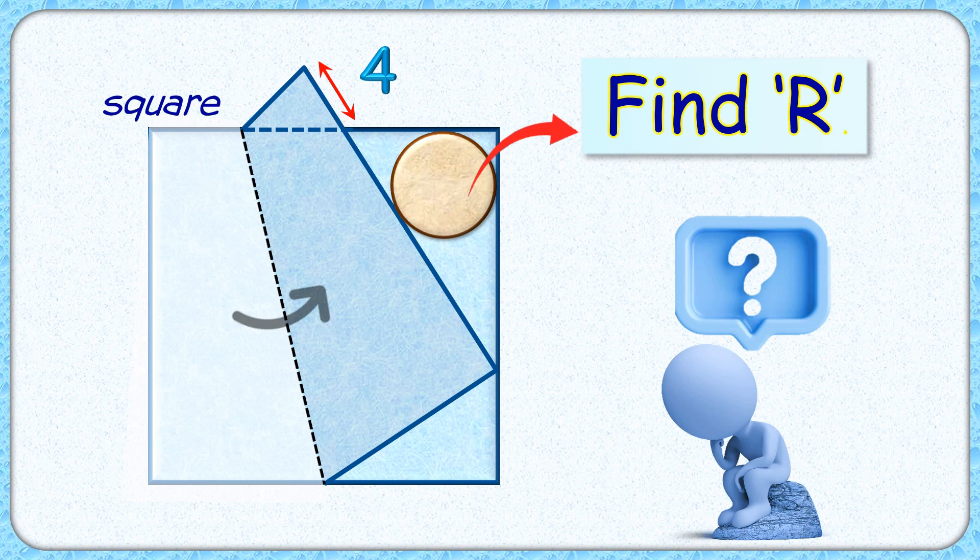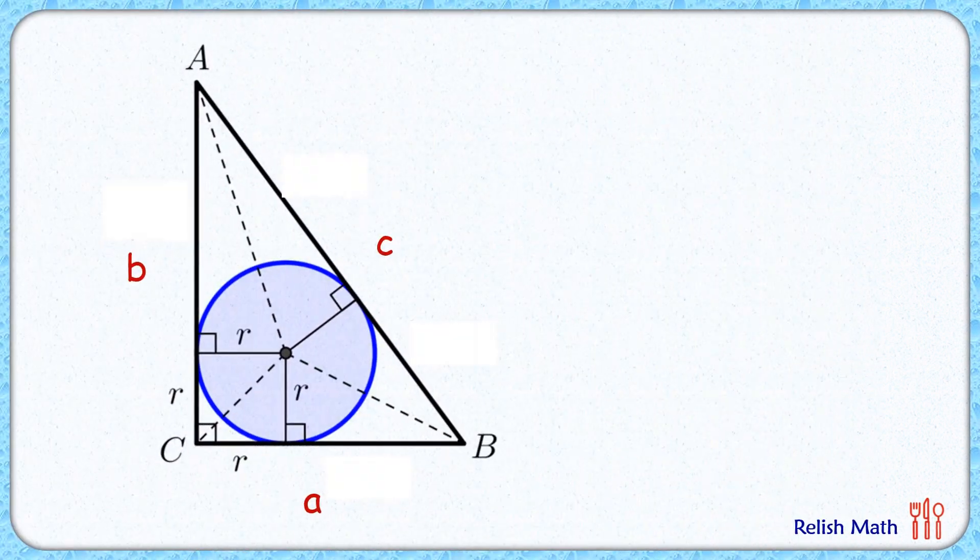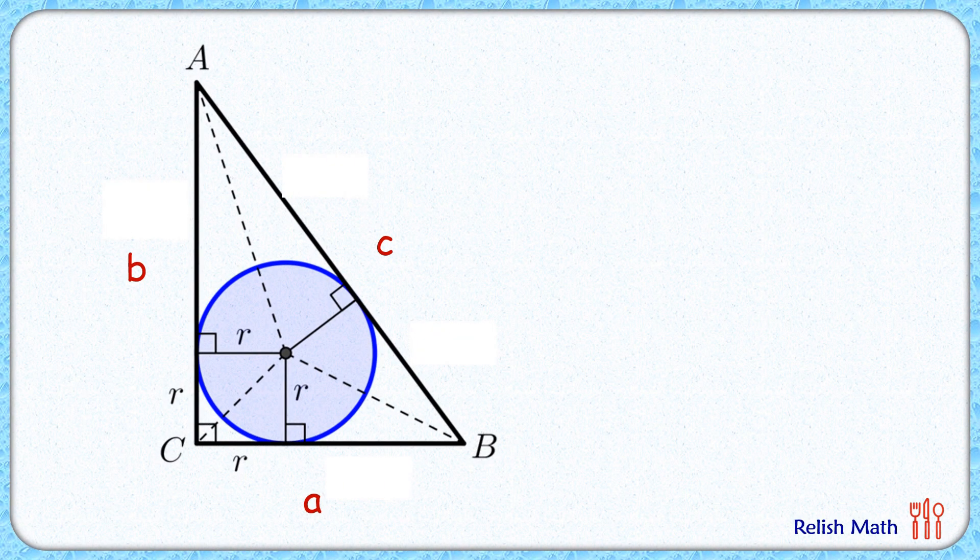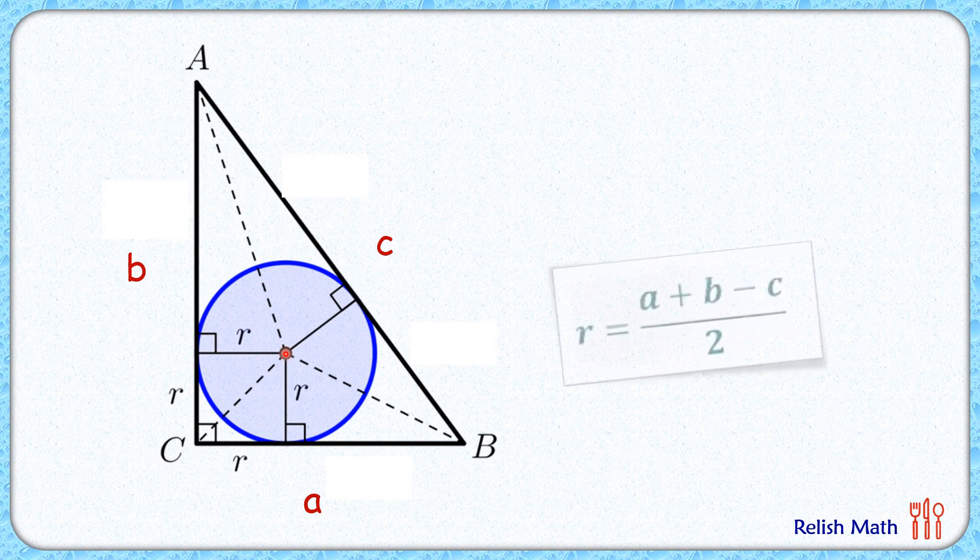To solve this question, we'll use a formula that for a right angle triangle with side length a, b, c, the value of inradius is given by (a + b - c) / 2.